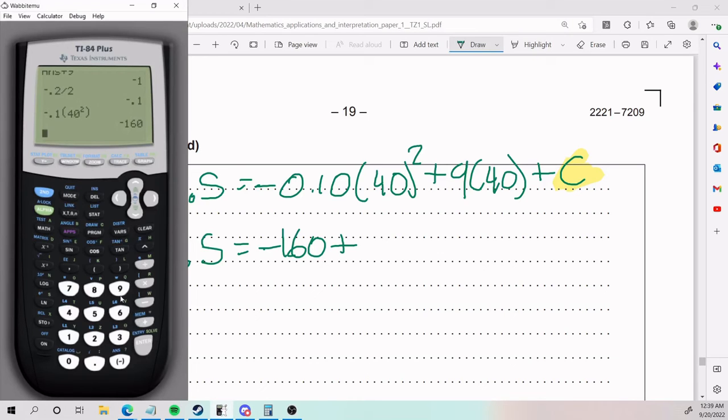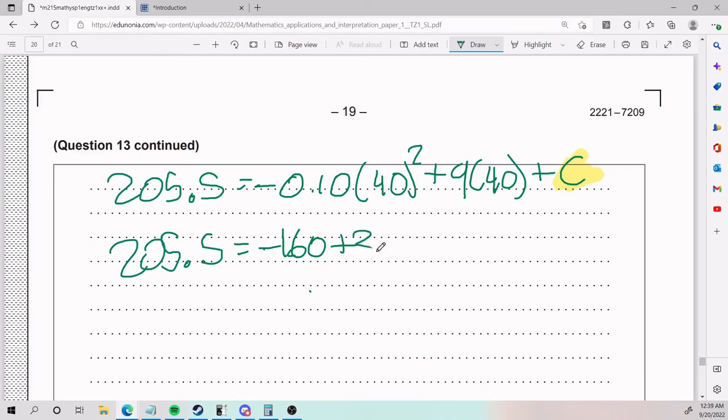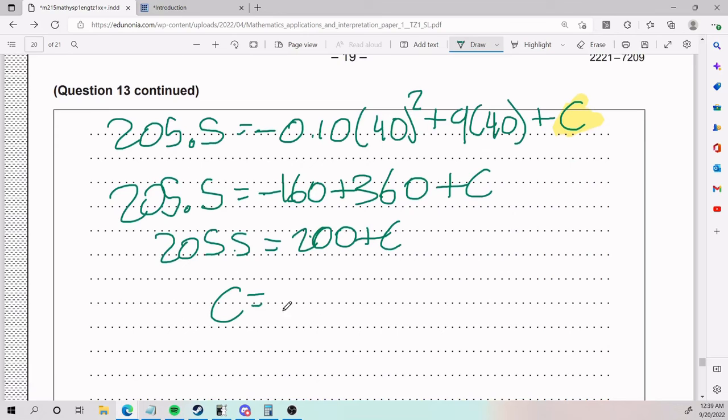This is being, we add 9 times 40, which we know is 360, plus C. So 205.5 equals 200 plus C. C has to be 5.5 because we do minus 200 to both sides.